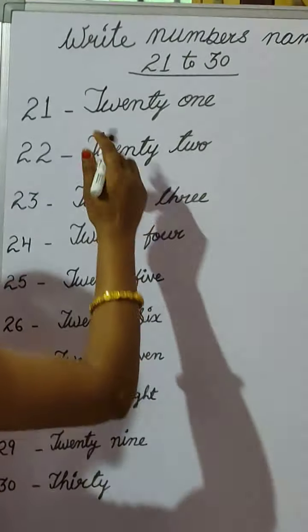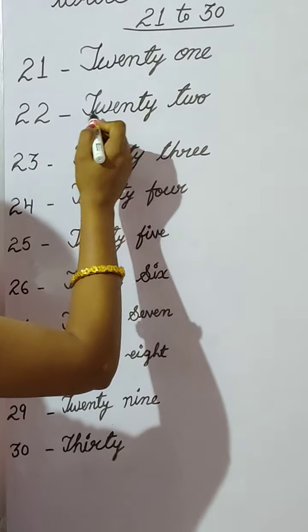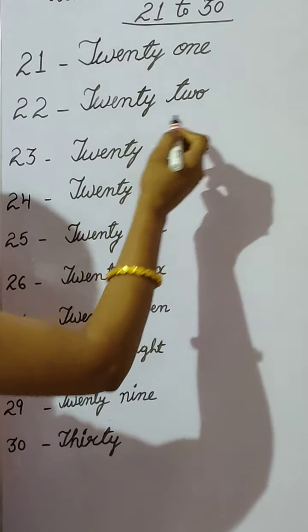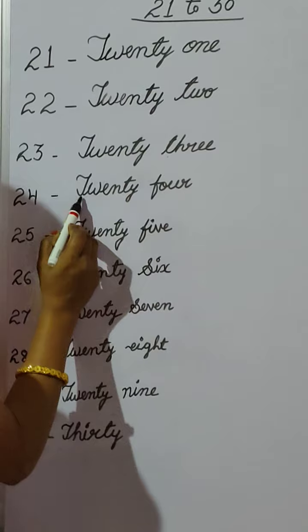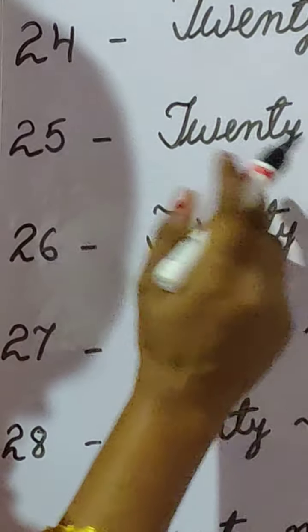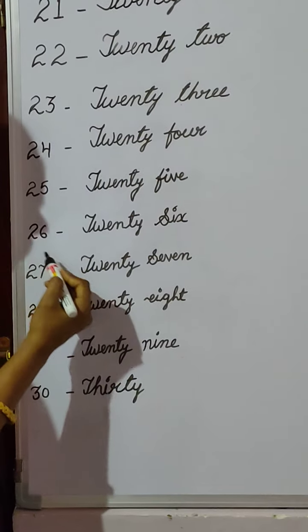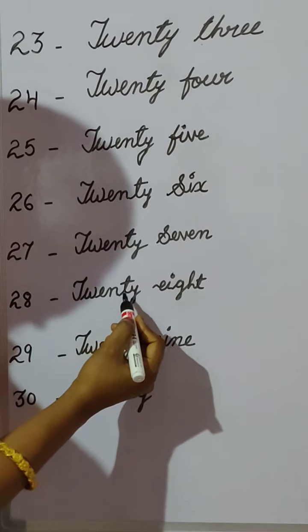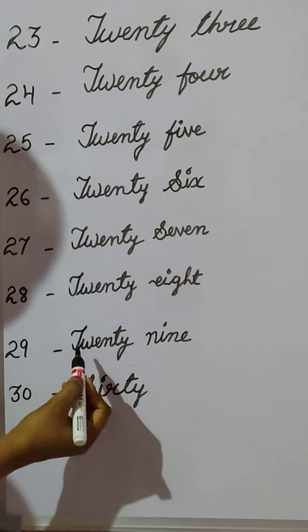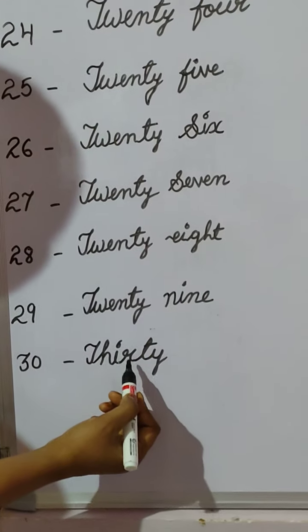Once again, let's revise all. 21 — TWENTY-ONE: T, W, E, N, T, Y, O, N, E. 22 — TWENTY-TWO: T, W, E, N, T, Y, T, W, O. 23 — TWENTY-THREE: T, W, E, N, T, Y, T, H, R, E, E. 24 — TWENTY-FOUR: T, W, E, N, T, Y, F, O, U, R. 25 — TWENTY-FIVE: T, W, E, N, T, Y, F, I, V, E. 26 — TWENTY-SIX: T, W, E, N, T, Y, S, I, X. 27 — TWENTY-SEVEN: T, W, E, N, T, Y, S, E, V, E, N. 28 — TWENTY-EIGHT: T, W, E, N, T, Y, E, I, G, H, T. 29 — TWENTY-NINE: T, W, E, N, T, Y, N, I, N, E. And 30 — THIRTY: T, H, I, R, T, Y.